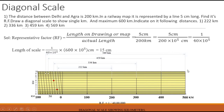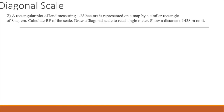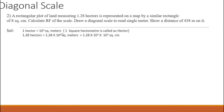Hope you understood the construction properly. Now we will see one more problem. A rectangular plot of land measuring 1.28 hectares is represented on a map by a similar rectangle of 8 square centimeters. Calculate the RF of the scale. Draw a diagonal scale to read single meters and show a distance of 438 meters. Since it is in meters, we have to show 400 meters, 30 meters, and 8 meters.